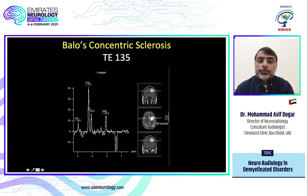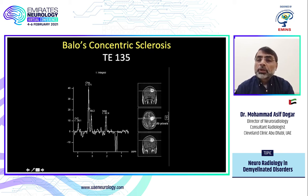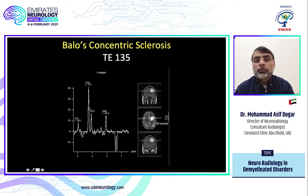Spectroscopy at 135ms TE shows a lactate peak, very low NAA, and choline too high relative to creatine — resembling a tumor spectrum. Again, spectroscopy is not helpful for differentiating demyelinating disease from tumor.